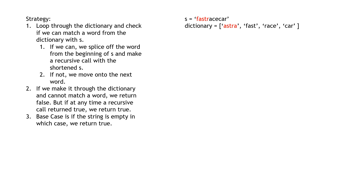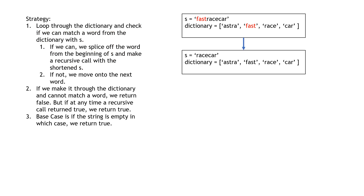This might be a bit confusing, so let's go through an example. We're going to start by comparing the first word in the dictionary to the first few letters of S. If they don't match, we move on to the next word. When we find fast matches the first four letters of S, we splice off those four letters and make a recursive call with the remaining part of the string. The dictionary stays the same throughout the whole algorithm.